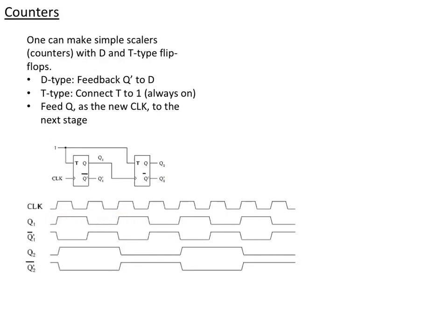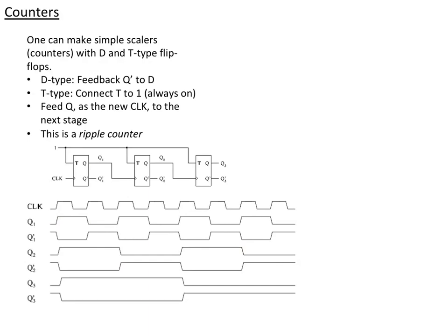We had this already, but now each one of these rising edges of the Q1 creates a change in the state of the Q2. And you can go to a third one, just in exactly the same way, and now we'll have an eighth of the clock cycle. This feeding of the output of one stage into the next is called a ripple counter, because the signal ripples through your sequence of counters.